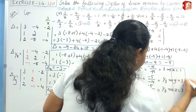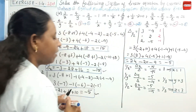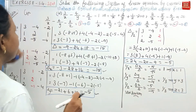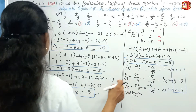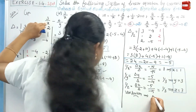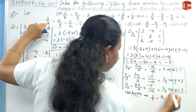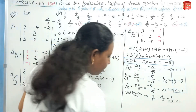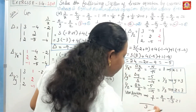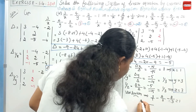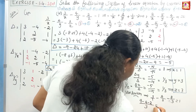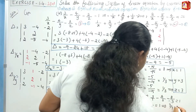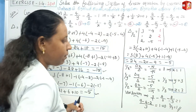Final step: verification. We check the first equation. Substituting x=1, y=3, z=3: 3/1 − 4/3 + (−2)/3 = 3 − 4/3 − 2/3 = 3 − 6/3 = 3 − 2 = 1. The left-hand side equals 1, confirming the answer is correct.